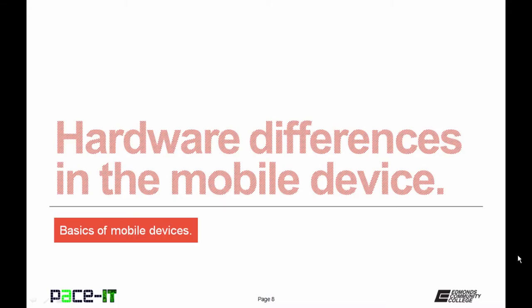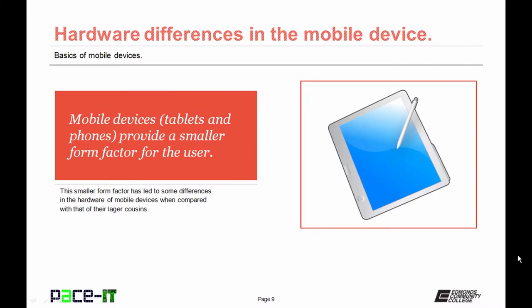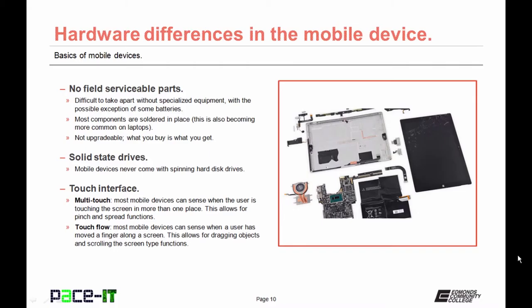Now let's move on to some of the differences between mobile devices and their larger cousins. Mobile devices provide a smaller form factor for the user — that's what makes them mobile. This smaller form factor has led to some changes in the hardware used. One of the first differences is that mobile devices usually don't have field serviceable parts, so they're difficult to take apart unless you have specialized equipment. Most of the components are soldered in place — unfortunately, that's becoming more common in some laptops, especially Ultrabooks. Also, with a mobile device, they are not upgradable; what you bought is what you get. All mobile devices come with some form of solid state drive, because a spinning disk would not be suitable — they just couldn't take the shock.